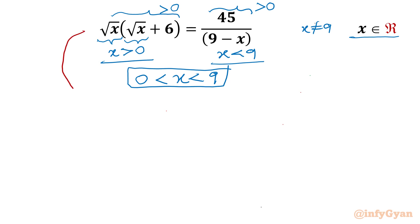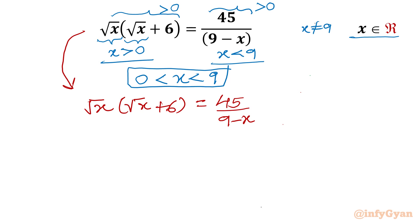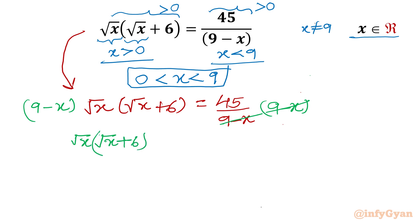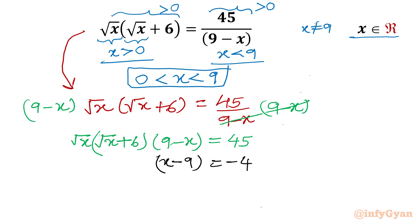Now consider our equation: root x times root x plus 6 equal to 45 over 9 minus x. I will multiply both sides by 9 minus x, which is non-zero. We can cancel those two terms, giving root x times root x plus 6 times 9 minus x equal to 45. Multiplying both sides by minus 1 converts the bracket to x minus 9, giving root x times root x plus 6 times x minus 9 equal to minus 45.